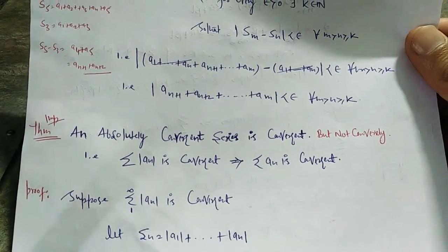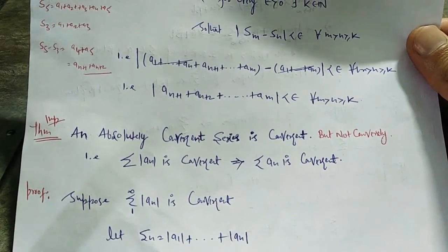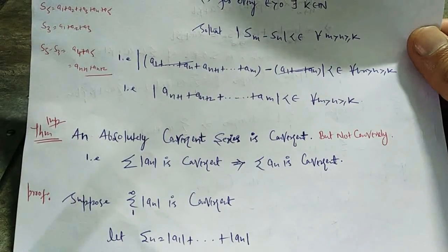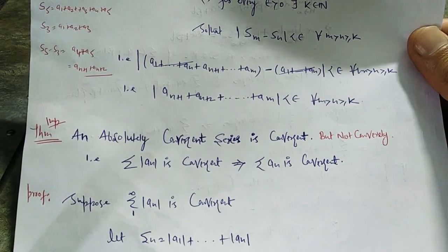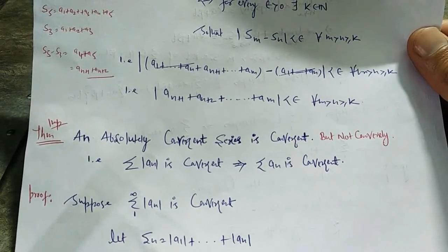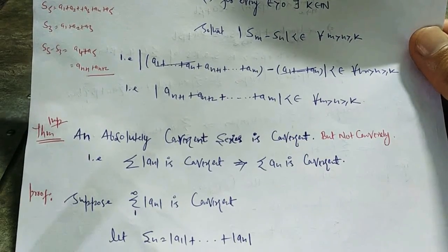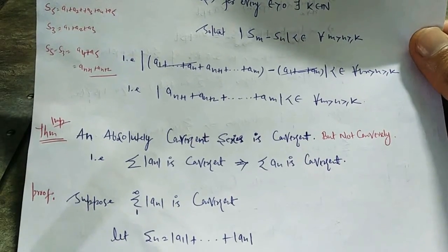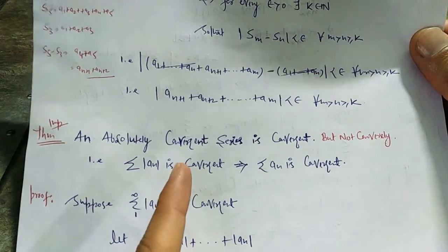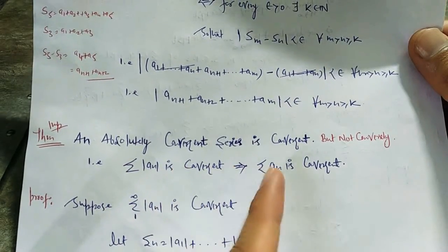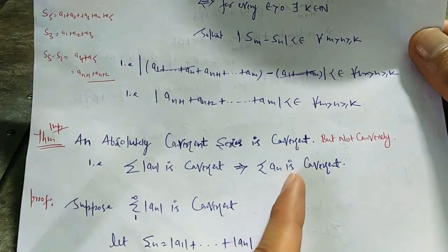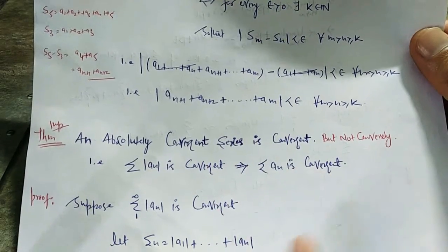The next theorem is: an absolutely convergent series is always convergent, but not conversely — the converse need not be true. This is a very important theorem that has appeared in exams many times. So it means if series |aₙ| is convergent, then series aₙ is convergent.